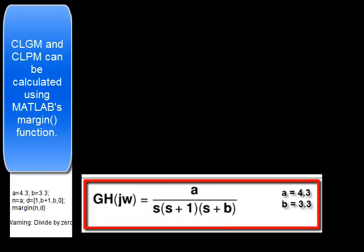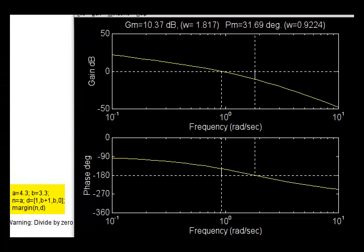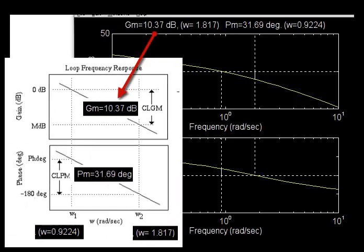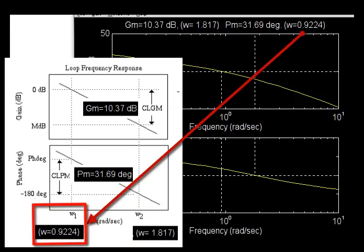Closed-loop gain margin and closed-loop phase margin can be calculated using MATLAB's margin function. That's closed-loop gain margin at that frequency, closed-loop phase margin at that frequency.